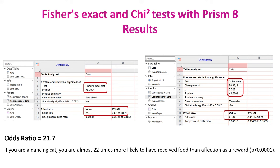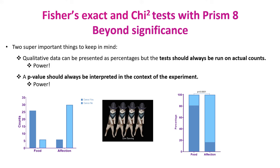Here are the results. On the left we have the Fisher's exact test, and on the right the chi-square we did together. We reached the same conclusion: there is a significant association between type of reward and likelihood of dancing. We can even be more specific and say that a dancing cat is almost 22 times more likely to have received food than affection as a reward. In data analysis, there is more than just significance. If qualitative data can be presented as percentages, the test should always be run on actual counts. Using percentages makes the sample size artificially 100, which can overestimate or underestimate the real sample. Remember, significance is not only about effect size — it is also about sample size. We need actual counts to get a p-value consistent with the confidence we have in our data.